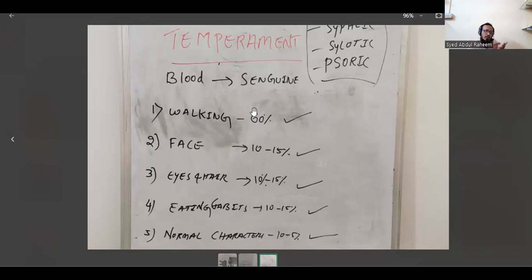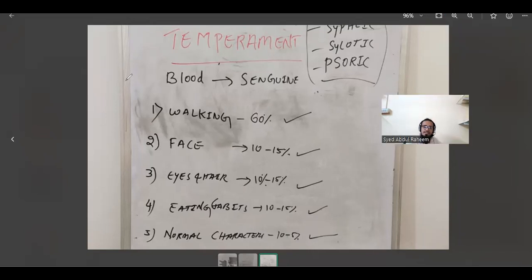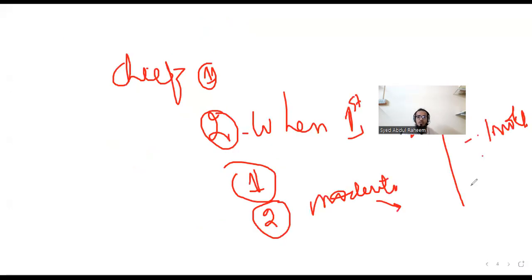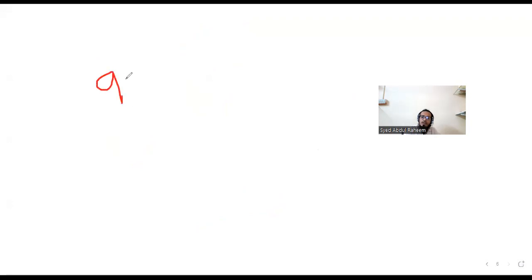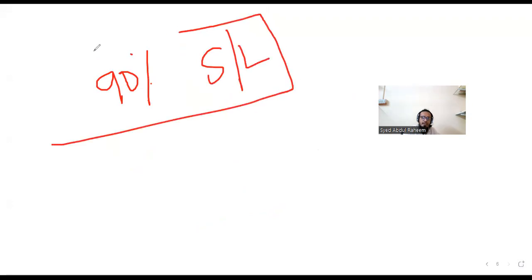So these five things must be understood. You have to make one column: walking — notice the walking style; face — observe the face; eyes and hair — see the hair and eyes; eating habits; normal characters. All these are very important. So basically, step one is to ask the questions, and step two is to check the temperament. You will then get the conclusion that this person belongs, for example, 93% to sanguine or lymphatic temperament.